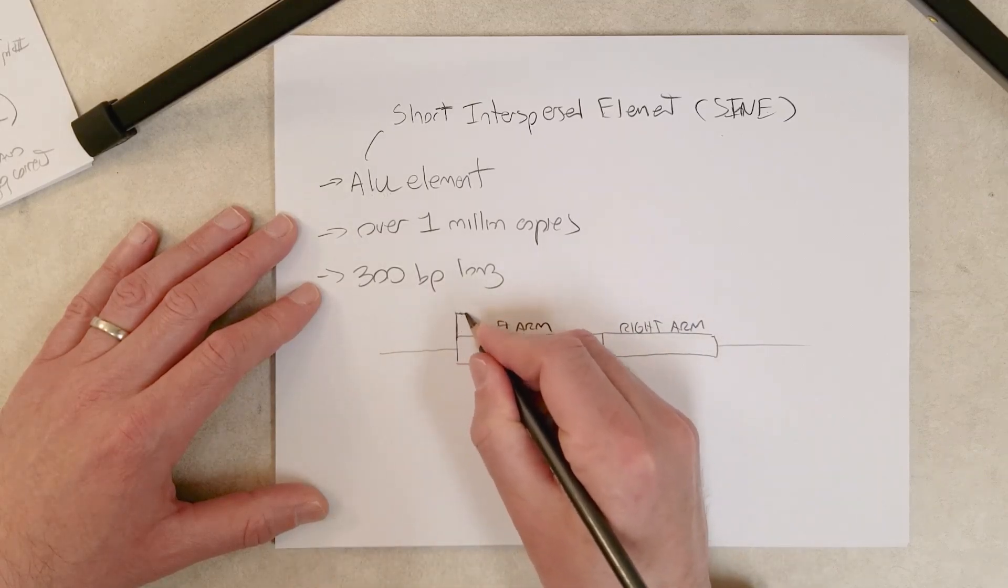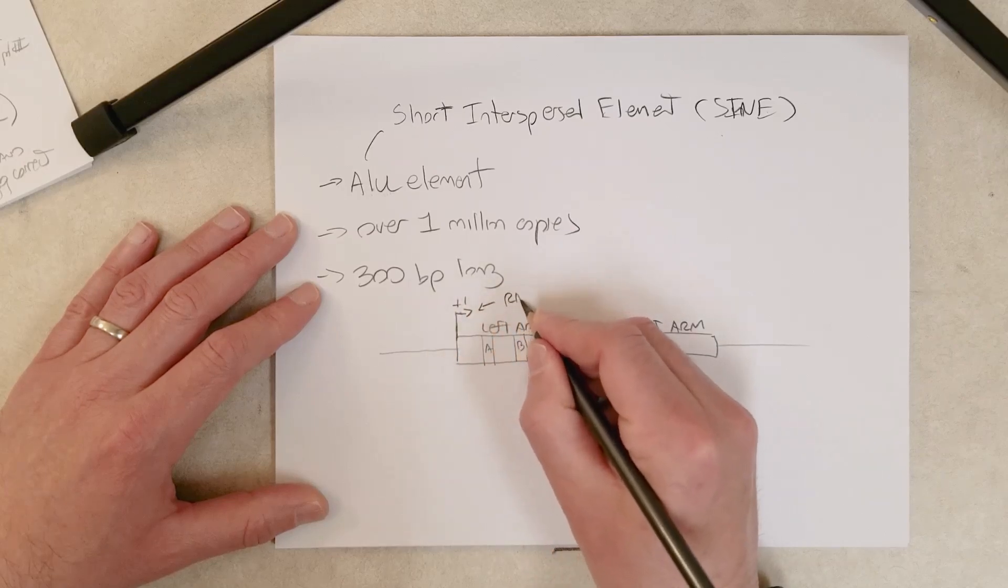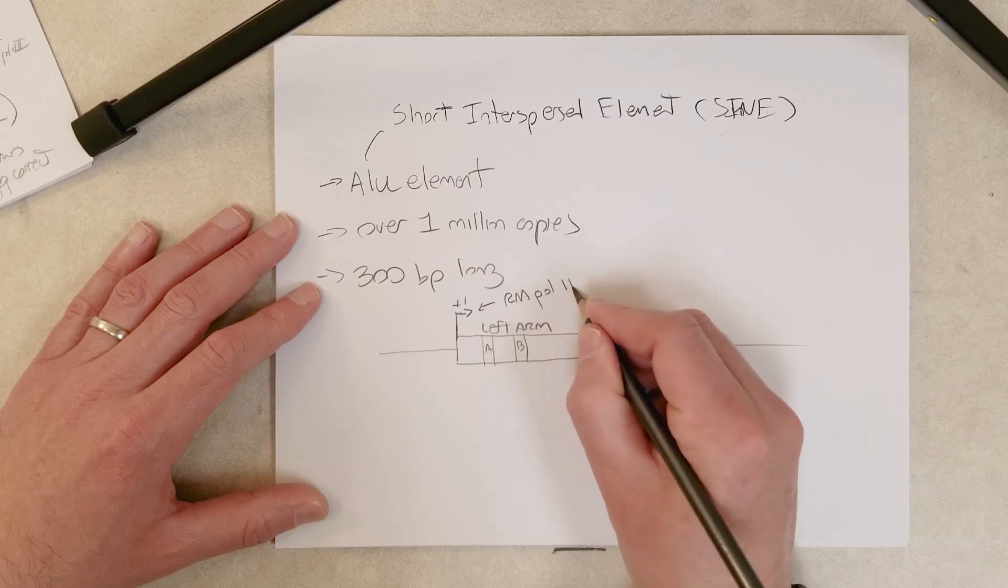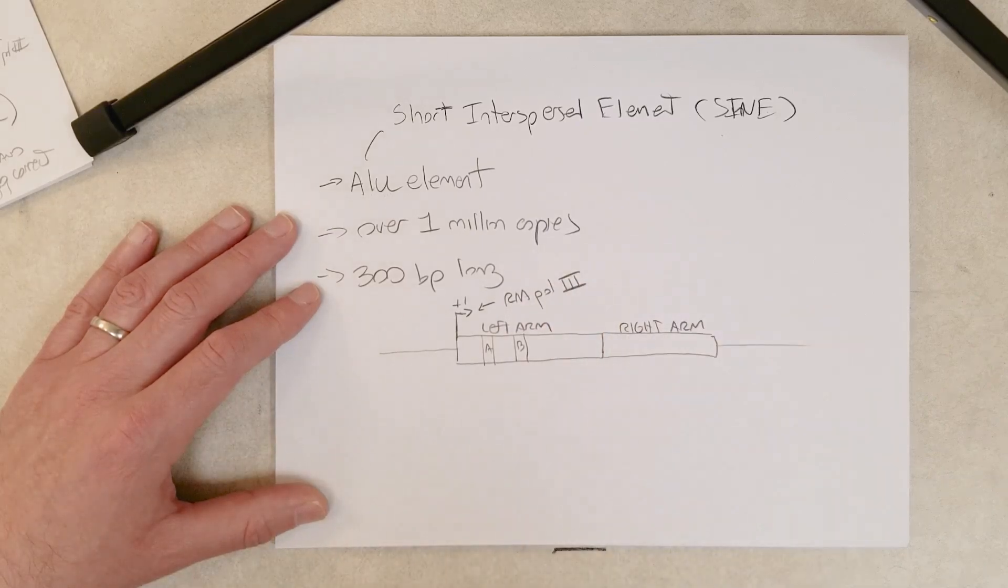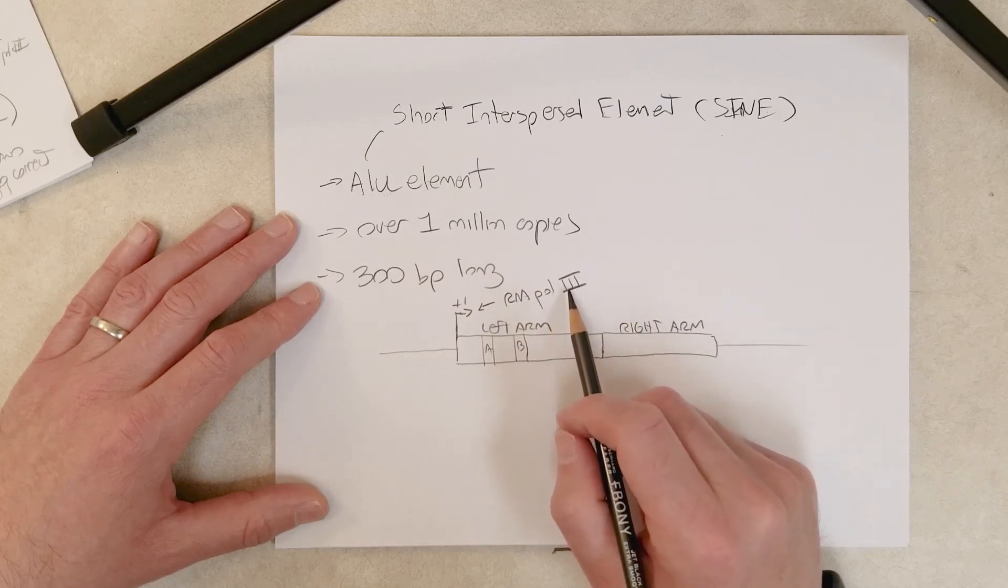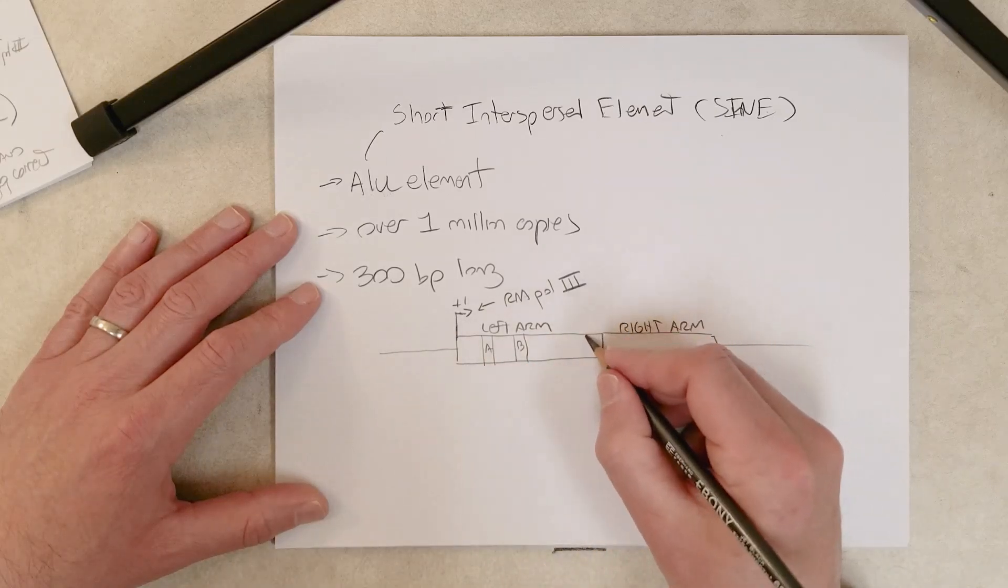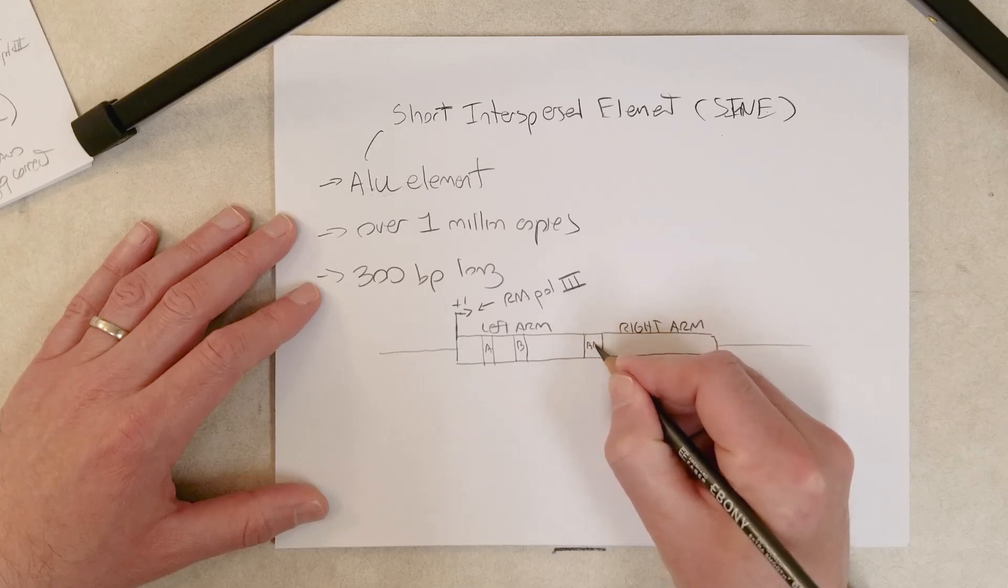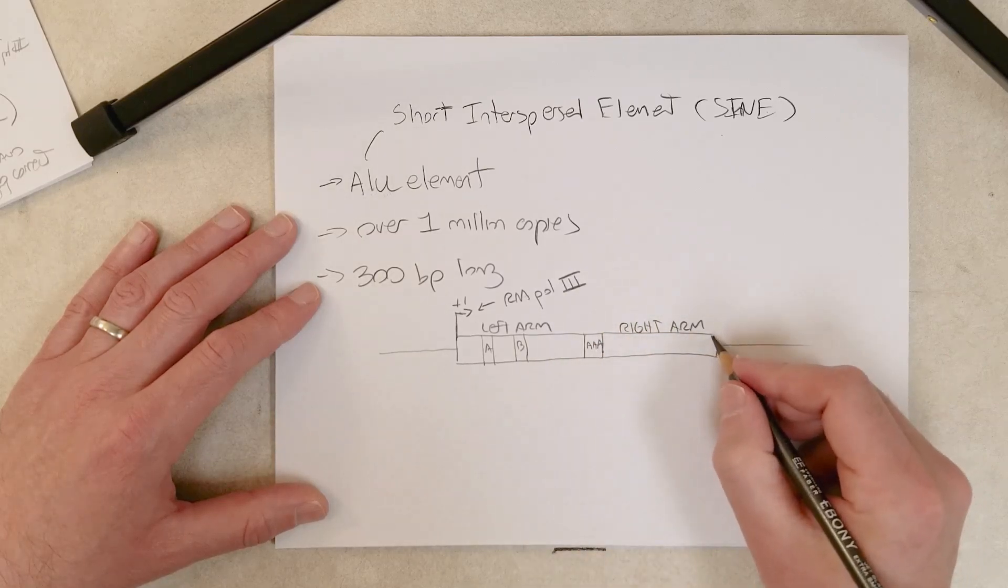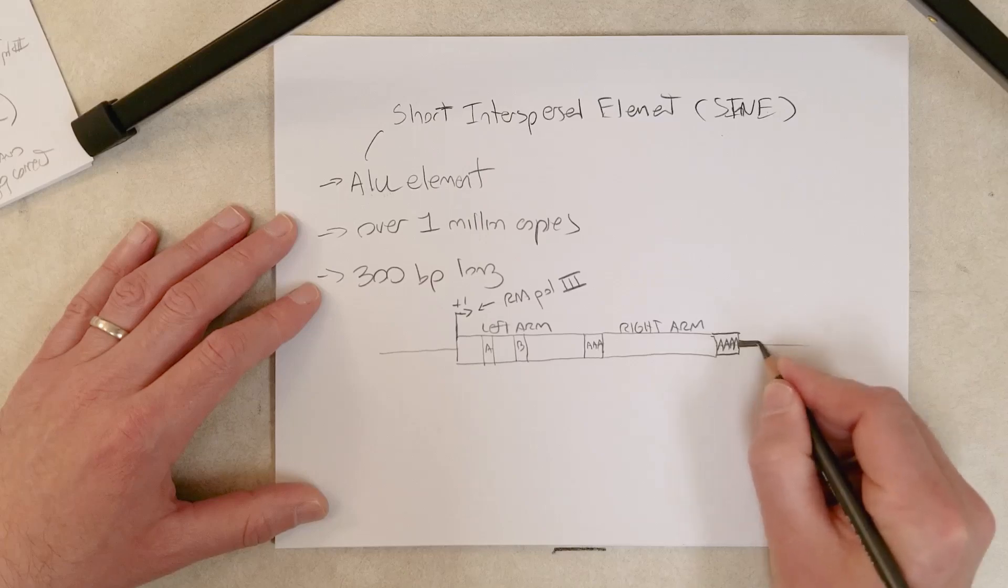There are some unique regions called A and B, or the A box and the B box. The very beginning of the element is the plus one site for RNA polymerase three. The left arm ends with an adenine rich sequence, and a similar adenine rich sequence is found at the end of the right arm.